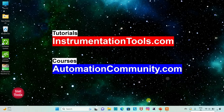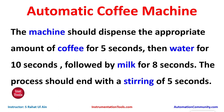Hello friends, welcome to Automation Community. Today in this video we are going to discuss an example on an automatic coffee machine. The machine should dispense the appropriate amount of coffee for 5 seconds, then water for 10 seconds, followed by milk for 8 seconds.